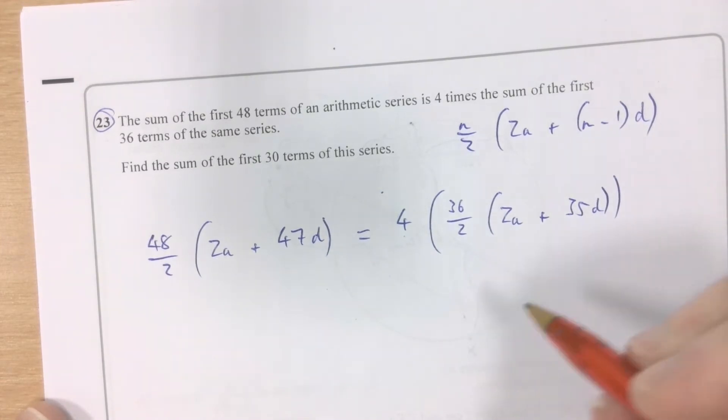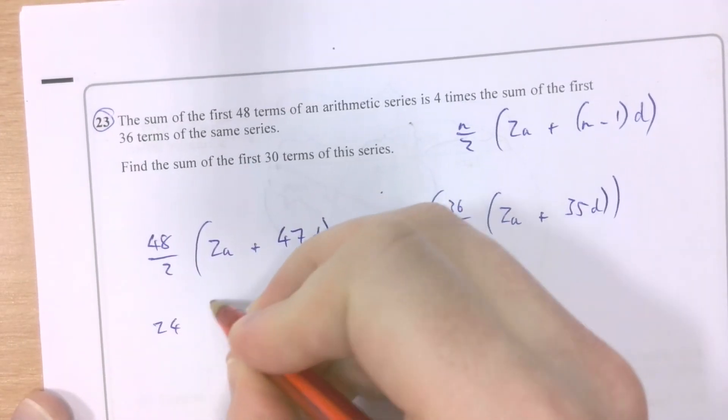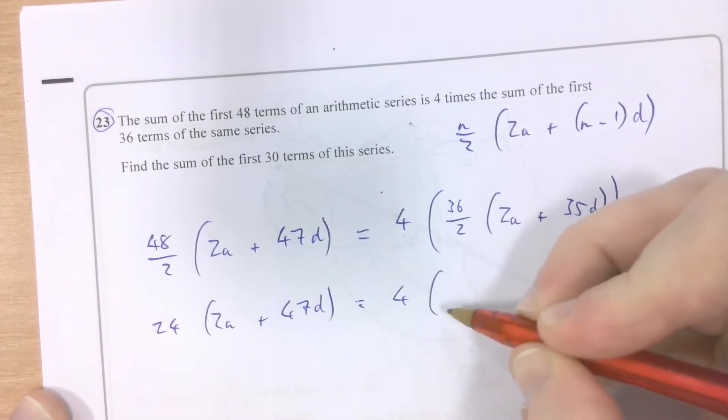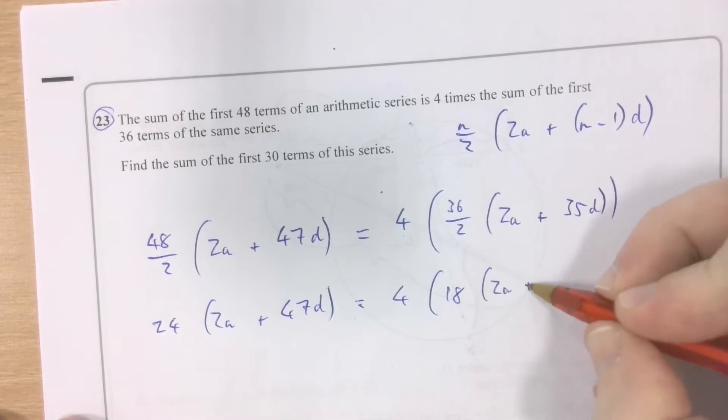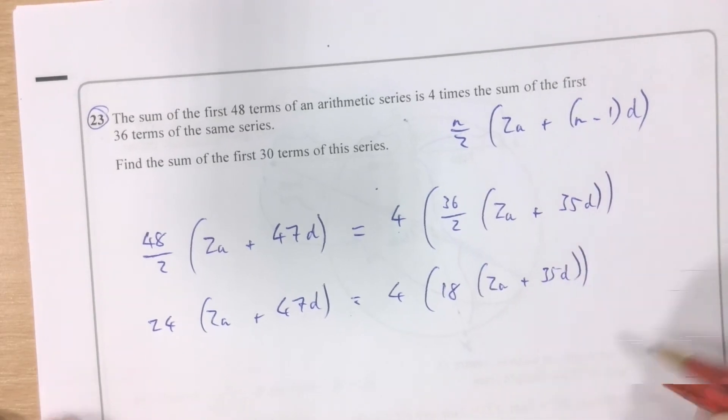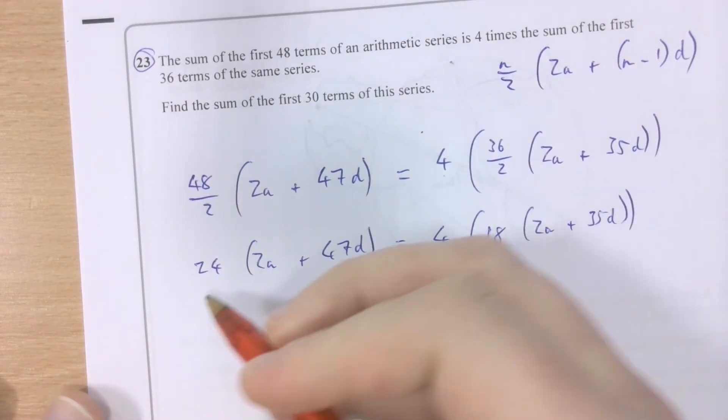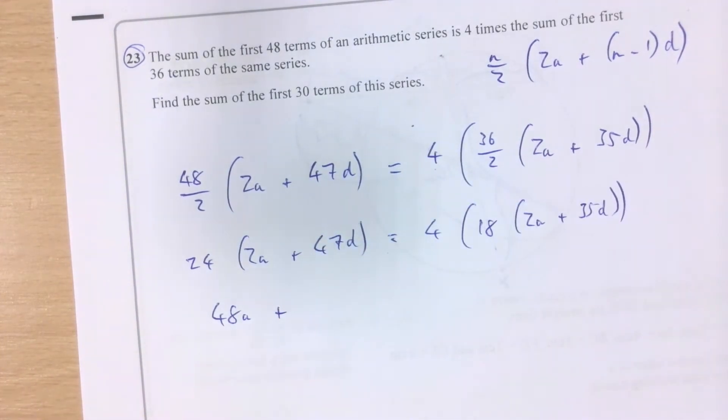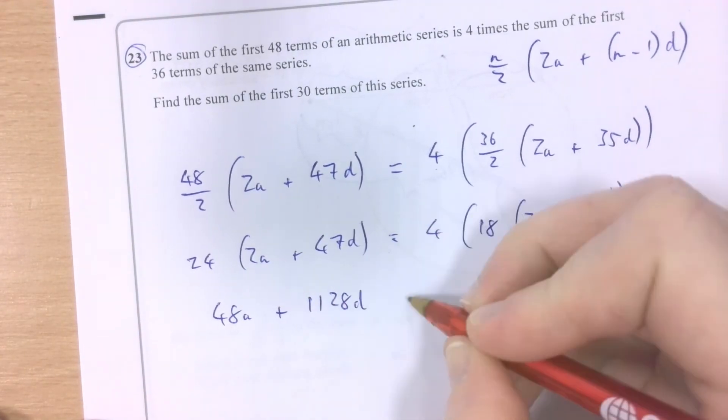So let's work this out nice and gently. 48 over 2 is 24. And then 36 over 2 is 18. You can tell how long a day I've had by the fact I'm using my calculator to check that. My goodness. Good. Now, let's try simplifying this. Let's expand. 24 times 2a is 48a, and 24 times 47 makes 1,128d on the left-hand side.